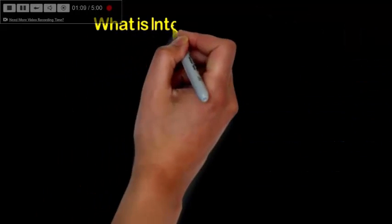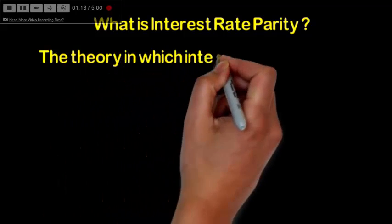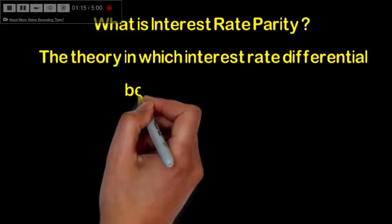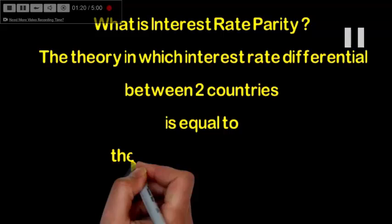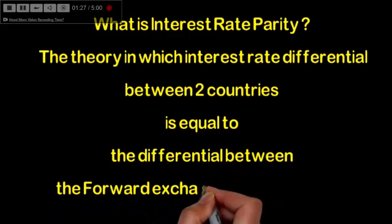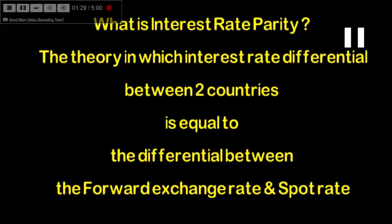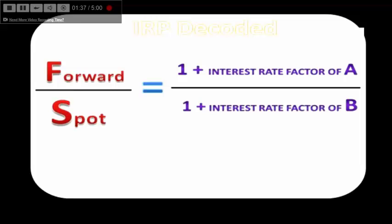So what is interest rate parity? Interest rate parity is the theory in which the interest rate differential between two countries is equivalent to the difference between their forward exchange rate and spot rate. In our case, the differential is 10% minus 5%. The equation states that the forward rate divided by the spot rate equals the interest rate factor.